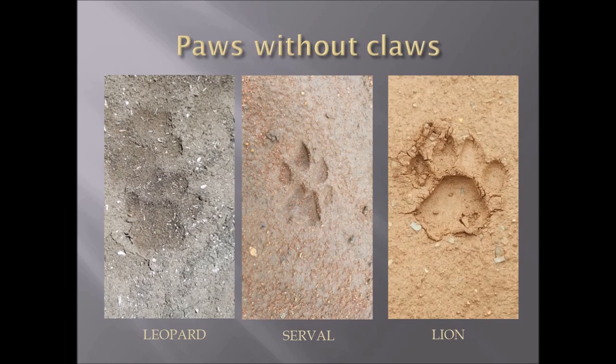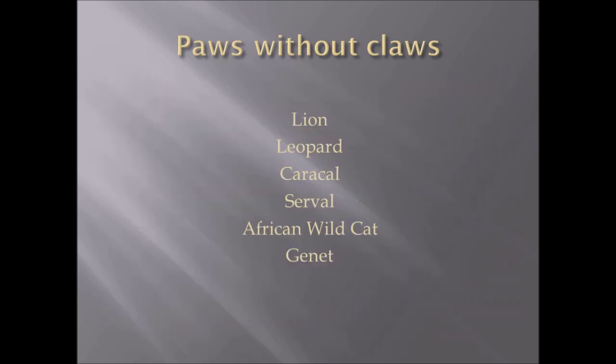For paws without claws, no claws are shown in the tracks unless the substrate is very deep or the animal is leaping or taking off at speed. Here we have a leopard on the left, which is a very round track; a serval with teardrop-like digits; and then a lion track on the right. Animals with paws without claws include lion, leopard, caracal, serval, and African wildcat — all from the feline family — and also the genet.